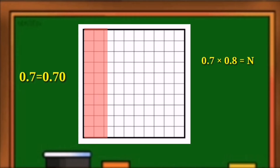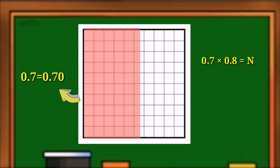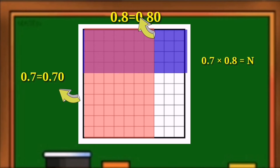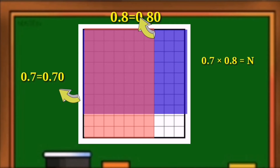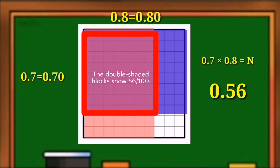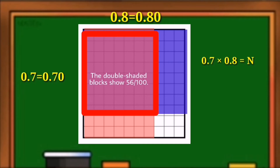We shaded 70 small squares red for 0.7 or 7 tenths, which is equivalent to 70 hundredths, and we colored 80 small squares blue for 0.8, which is equivalent to 80 hundredths. The area where the shading overlaps shows the product of the two decimals. The product of 7 tenths times 8 tenths is 56 hundredths or 0.56. Note that when you multiply a number by a decimal number less than 1, the product will always be smaller than the number being multiplied.